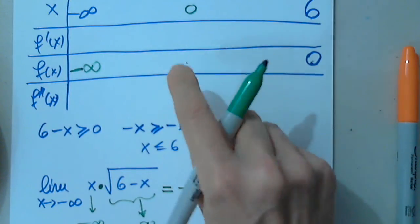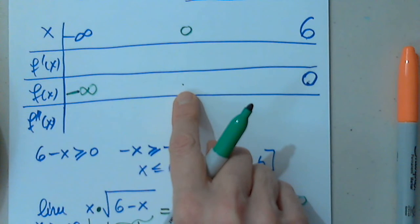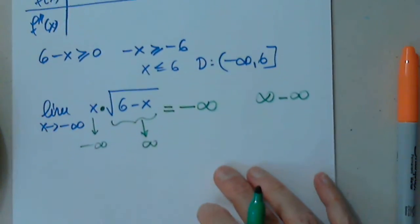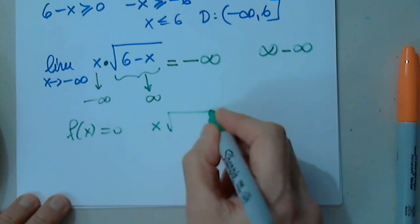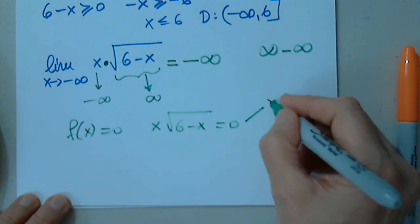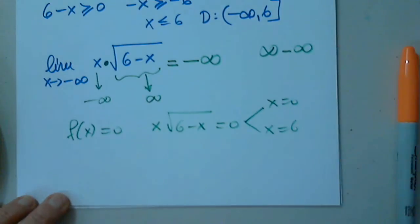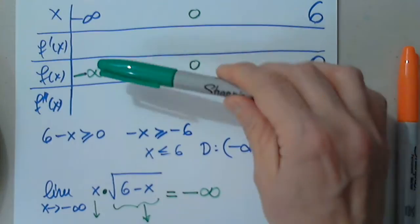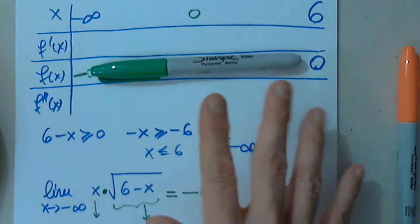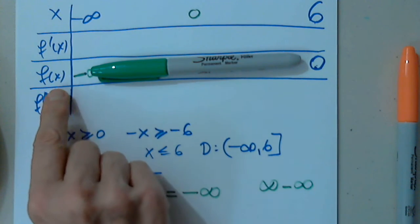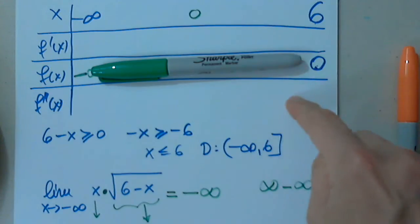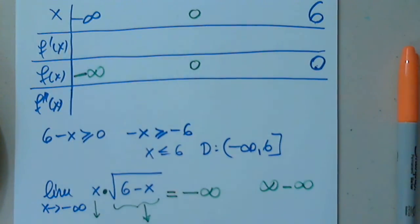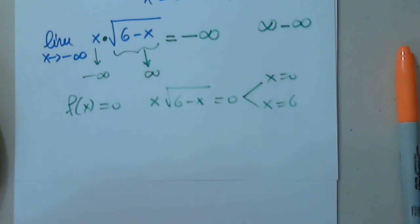Now for x and y intercepts: at x = 0 the function value is 0. Setting f(x) = 0 gives x times the square root of 6 minus x = 0, so x = 0 or x = 6. Both are already in the table. We do not ever study the sign of the function — only the sign of the first and second derivatives.